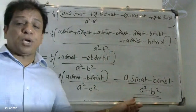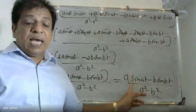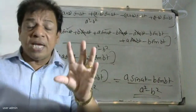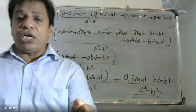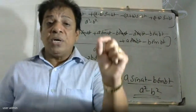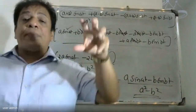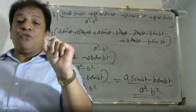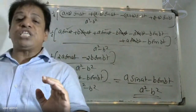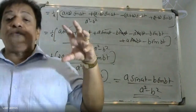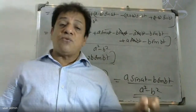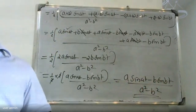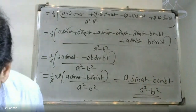The convolution property states: if L inverse of F̄ = f(t) and L inverse of Ḡ = g(t), then L inverse of [F̄ · Ḡ] = integral from 0 to t of f(u) · g(t − u) du. Using this, the final answer is: L inverse of s² / [(s² + a²)(s² + b²)] = [a·sin(bt) − b·sin(at)] / (a² − b²).